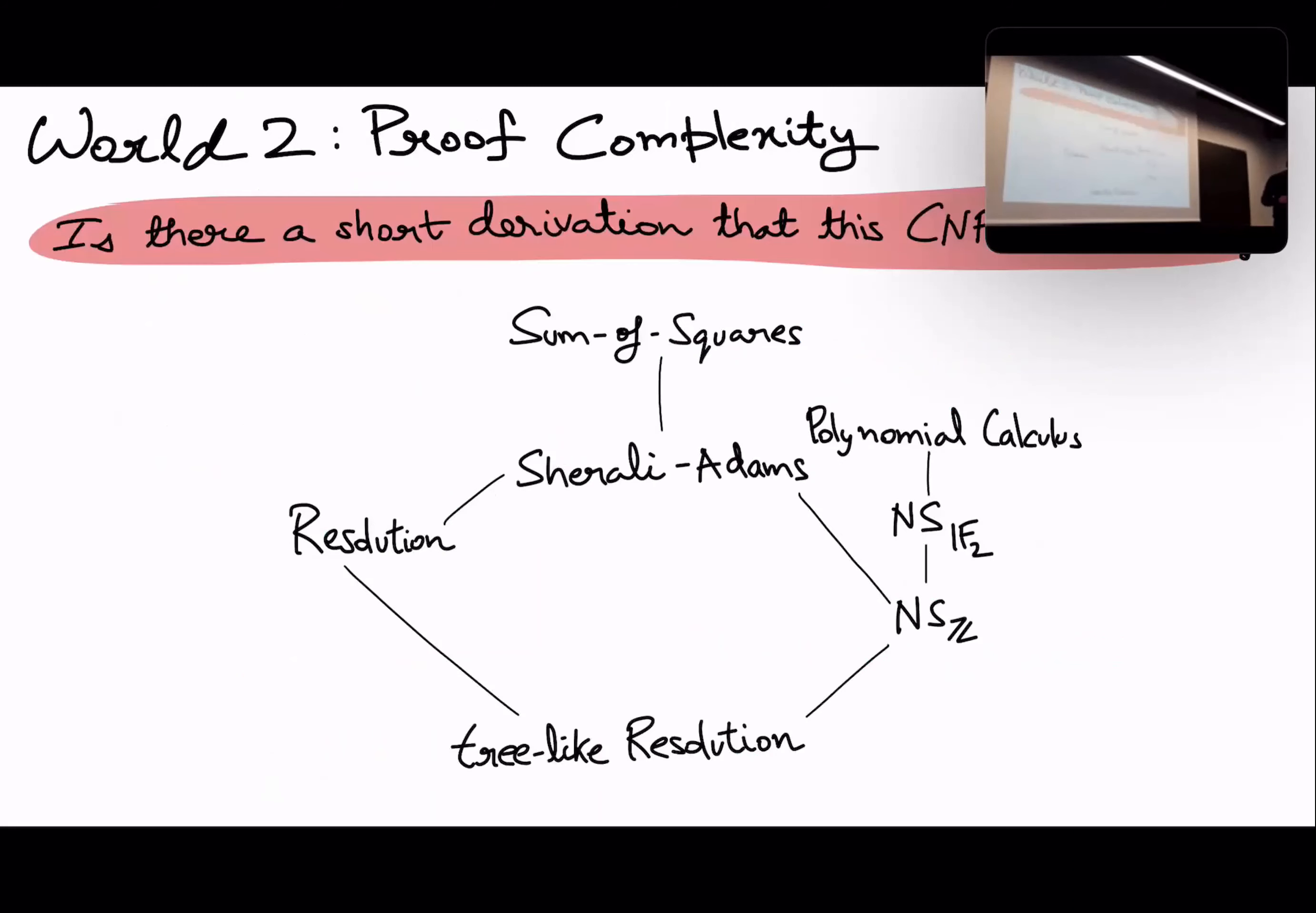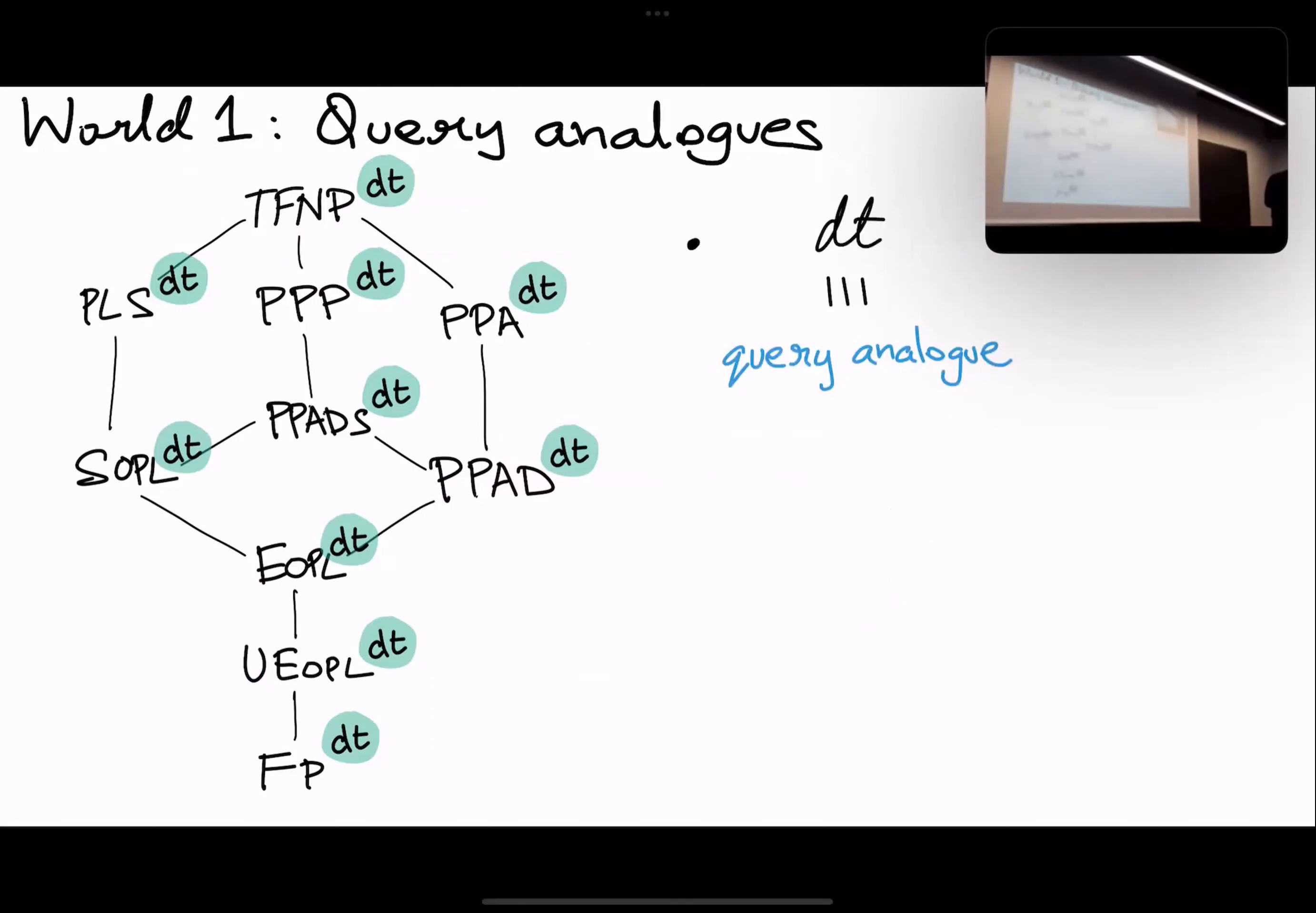And from the definition of the problems earlier I gave you, I gave you a circuit to compute the successor. Now I give you a shallow decision tree to compute the successor and so on. I think there was a question in the chat whether this holds for low degree Sherali-Adams or whether you're capturing all of Sherali-Adams. I'm saying that polylogarithmic degree Sherali-Adams does not simulate resolution. Does that answer the question? Yes, it does answer the question.